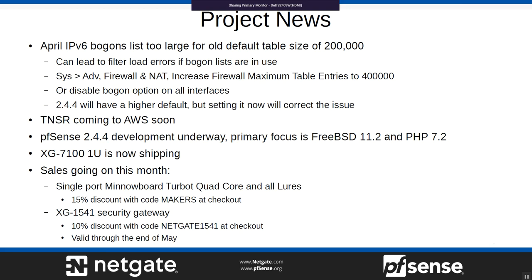Our XG-7100 units are shipping now. If you ordered one, there is a fairly large backorder queue they're working through — still a couple of weeks of lead time. We also have some sales going on this month: the miniboard turbo quad core and all the lures are 15% off with the 'makers' coupon at checkout. The XG-1541 has a 10% discount with the 'netgate1541' code, good through the end of May.